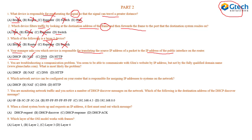Question five: you are troubleshooting a communication problem. You can communicate with a website by IP address but not by fully qualified domain name. DNS resolves domain names into IP addresses and vice versa. DHCP deals with dynamic allocation of IP addresses. NAT translates private IP addresses to public. HTTP displays HTML web pages. Considering this problem, the correct answer is DNS.